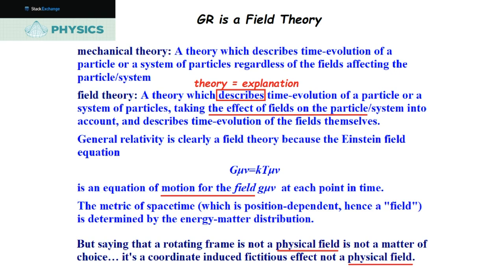A field theory describes time evolution of a particle or system of particles taking the effect of fields on the particle into account. General relativity is clearly a field theory because the Einstein field equation is an equation of motion for the field. At each point in time, the metric of space-time — which is position-dependent — is determined by the energy-matter distribution. So they're looking at all this fuzziness they don't understand: the word 'energy' and the word 'field.'